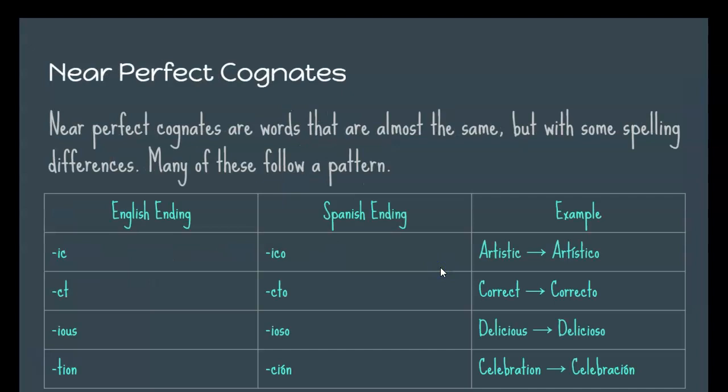Near perfect cognates are words that are almost the same but they have some spelling differences, and many of them follow patterns. So if it's an English word that ends in ic, it would change to the Spanish ending of ico. So artistic would be artistico. Notice the stress is on that second syllable and you'll normally find the stress there. It's going to change the way that the word is pronounced.